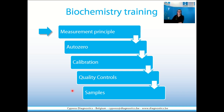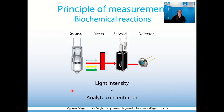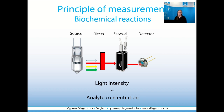The measurement principle. All the Cypress Diagnostics analyzers use the same principle of measurement. A source will emit light which passes through filters with a specific wavelength. This light then goes through the flow cell and it is detected by a detector. The intensity of the light captured by the detector is directly proportional to the analyte concentration. The analyte will be contained in the flow cell.